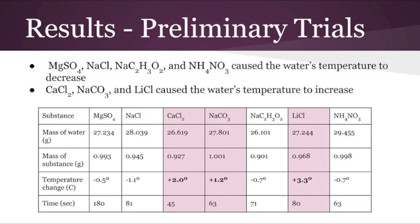Our preliminary trials revealed that four of the ionic compounds, magnesium sulfate, calcium chloride, sodium acetate, and ammonium nitrate, absorbed energy upon dissociation in water, and therefore would not be appropriate for use in a hand warmer.